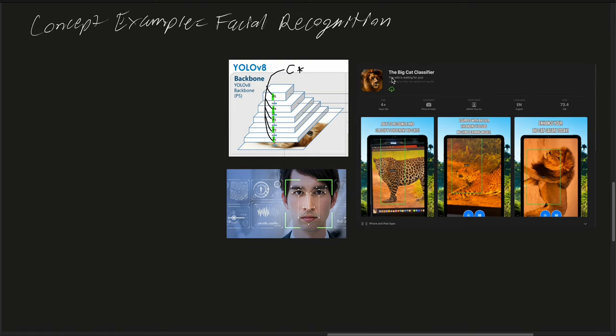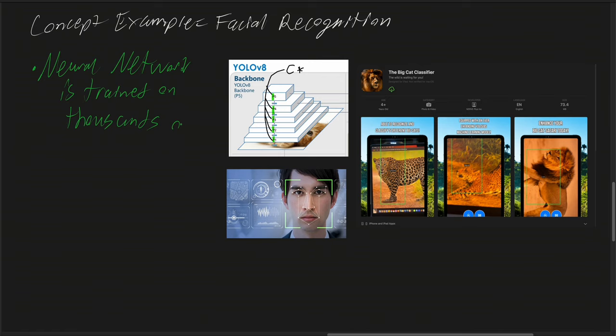A neural network is trained on thousands of images. In the realm of deep learning and supervised learning, the conventional approach is typically more data and more GPUs to be able to achieve a higher means of accuracy. But the key point is that in this facial recognition example, the neural network has been trained on thousands of images.